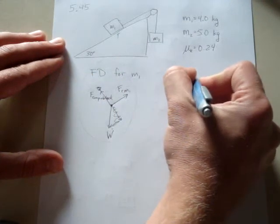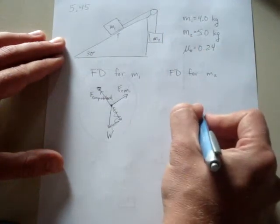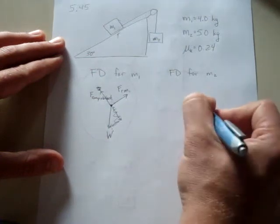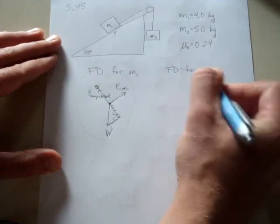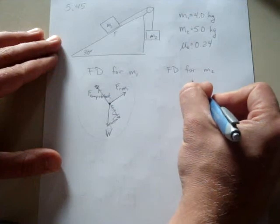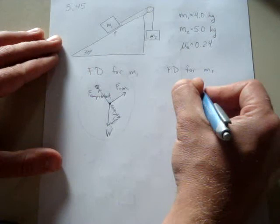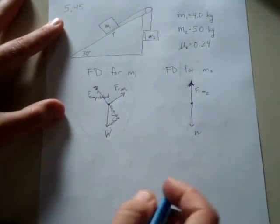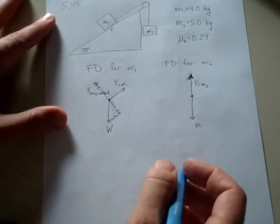The force diagram for M2 is going to be simply the weight and the tension. This is the force of the rope on M2. Okay, and that's pushing up. Okay, so we have those in place.